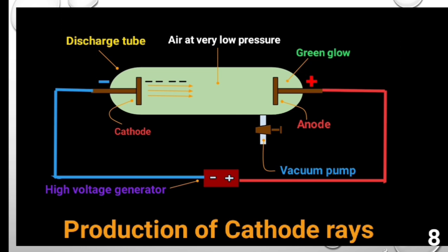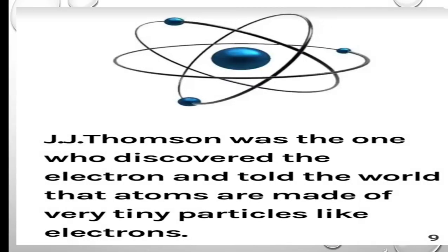as it is used to study the electrical conduction through gases at low pressure. So, by this experiment, Sir William Crookes gave proof about the presence of electrons in an atom. Later, in 1897, a British scientist, J.J. Thompson was the one who discovered the electron and told the world that atoms are made up of very tiny particles like electrons.